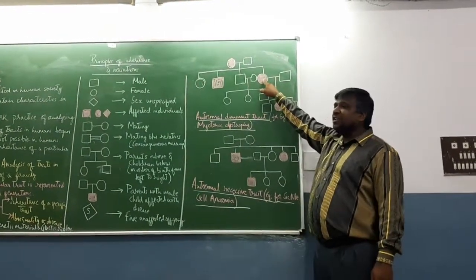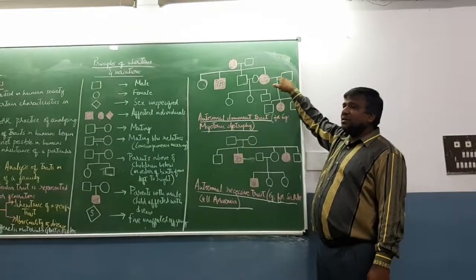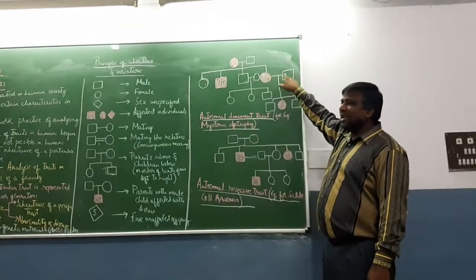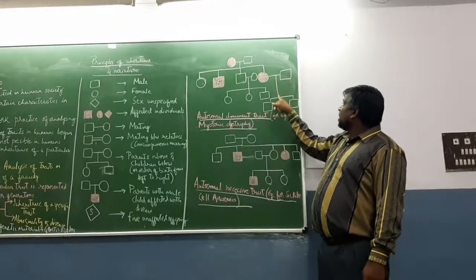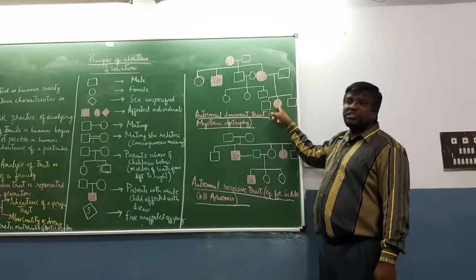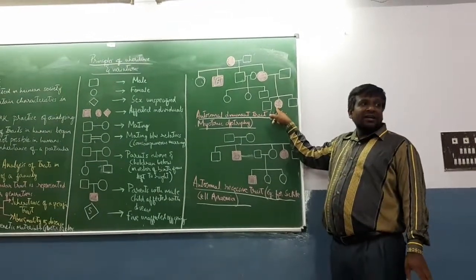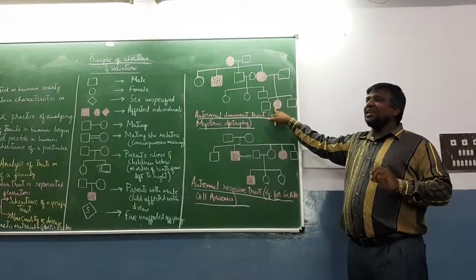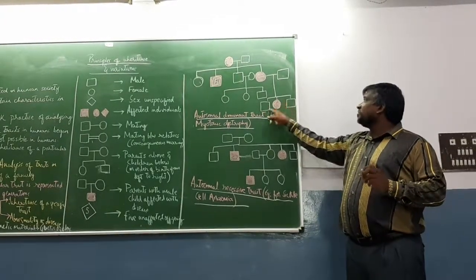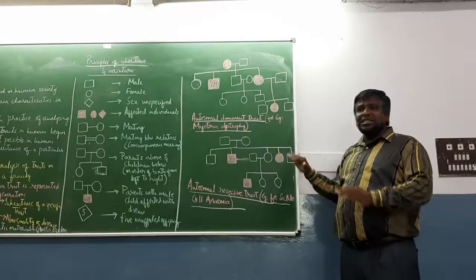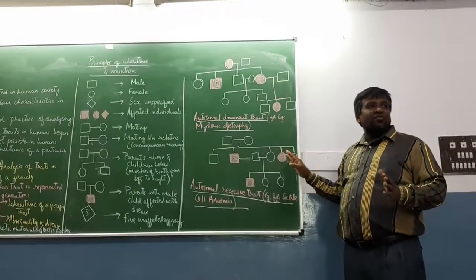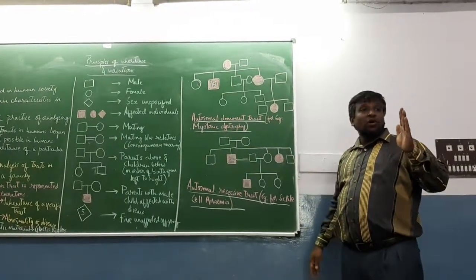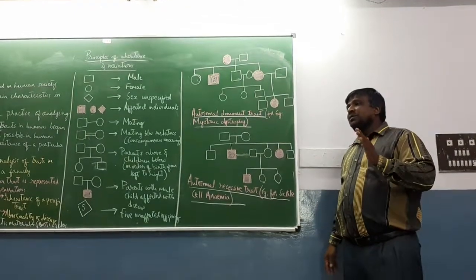Now the affected female has undergone mating. Affected daughter with a normal male. They have had three offspring of which one is affected daughter who has the disorder. But males do not have this disorder. This is the type of pedigree chart we get for autosomal dominant trait.